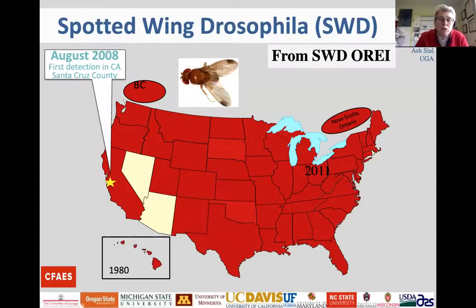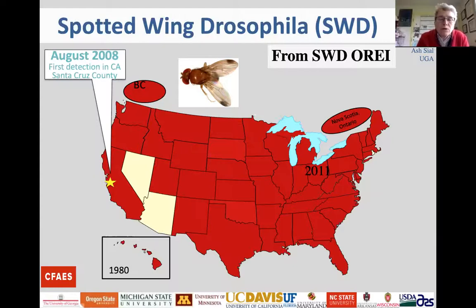In terms of distribution, we knew it was in Hawaii back in 1980, and it didn't reach the mainland until August 2008 when it arrived in California. Ohio had its first detection in 2011. This map, done in 2016, shows that after a very quick invasion in 2009 to the west coast and parts of the east coast, it spread over the entire country in very short order.